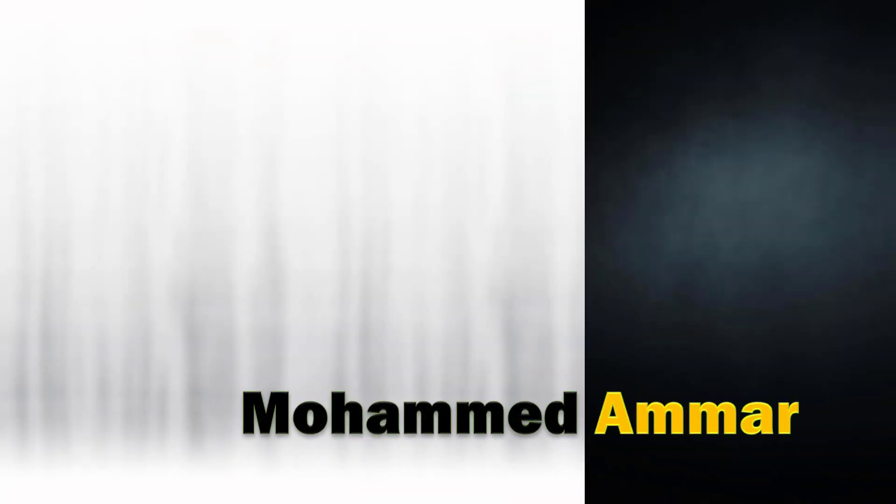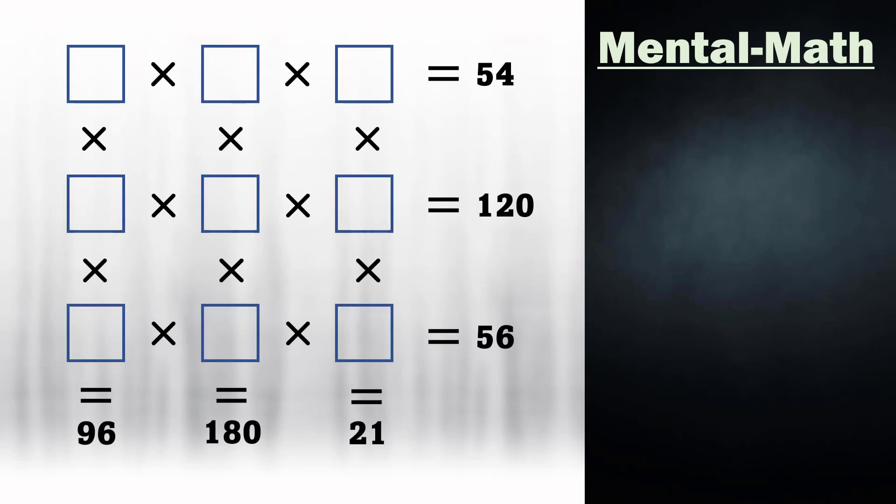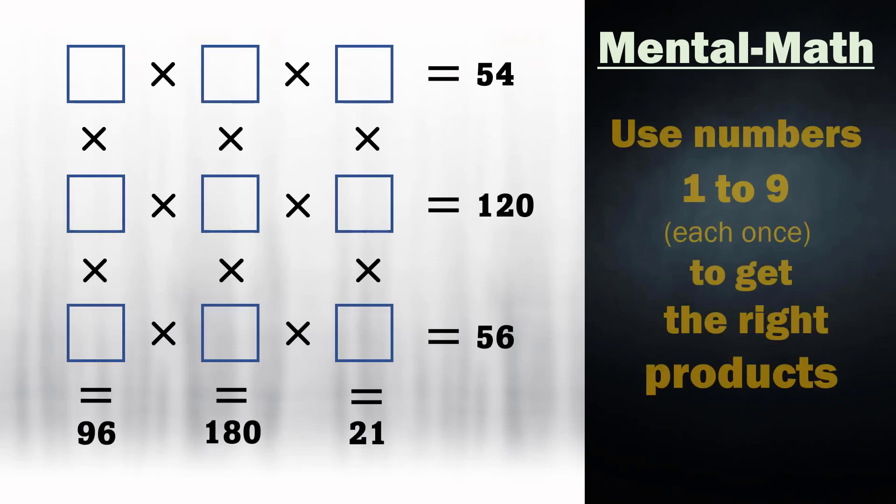What's up logical people, this is Ammar. I have an easy and quick mental math problem for you. Fill in the empty squares using the numbers from 1 to 9 so that each row and each column has the right product. All the numbers from 1 to 9 must be used.